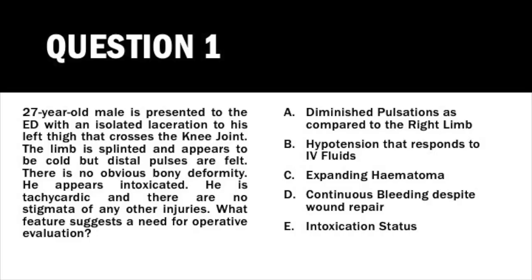Question 1: Which features suggest a need for operative evaluation? Options: diminished pulsations compared to the right limb; hypotension that responds to IV fluids; expanding hematoma; continuous bleeding despite wound repair; intoxication status. Clinical stem: a 27-year-old male presents to the emergency department with an isolated laceration to the left thigh that crosses the knee joint. The limb is splinted and appears cold, but distal pulses are well felt. There is no obvious bony abnormality. He appears intoxicated, is tachycardic, and there are no stigmata of other injuries. Pause and make a guess.